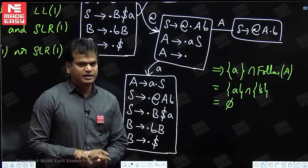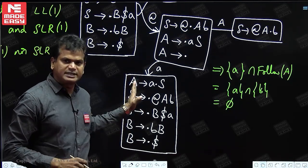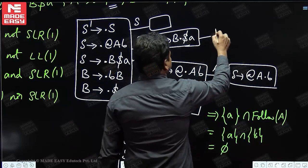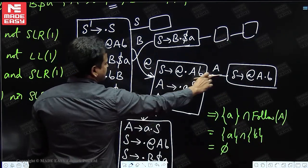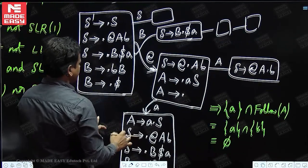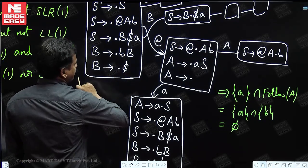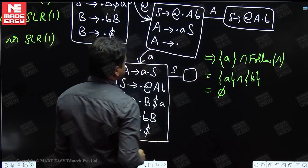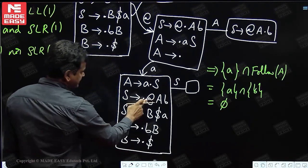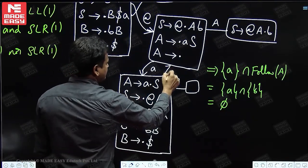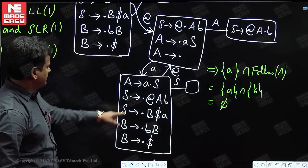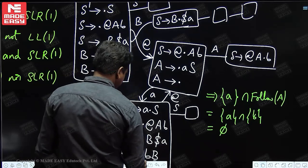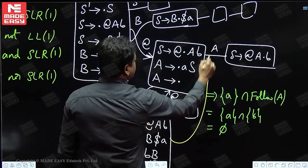We do not have any final item in this state, so no conflict to check. Continuing: on S it is single; on at-the-rate it gives a state similar to the earlier one; on B you get a new state. On small b: B → B dot B, and adding B's productions: B → dot BB and B → dot dollar. No final item here either, so close this state.